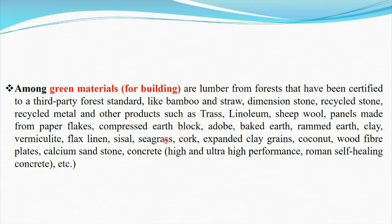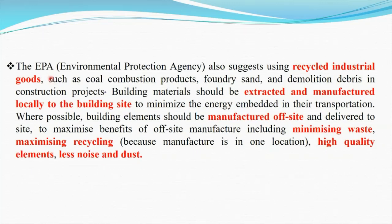Most of these materials can be recycled, and we try to find non-toxic materials for any process or project. The Environmental Protection Agency also suggests using recycled industrial goods such as coal combustion products, foundry sand, and demolition debris from construction projects. Building materials should be extracted and manufactured locally to minimize the energy used in transportation. Where possible, building elements should be manufactured off-site and delivered to the site, minimizing waste and maximizing recycling, resulting in high-quality elements with less noise and dust.